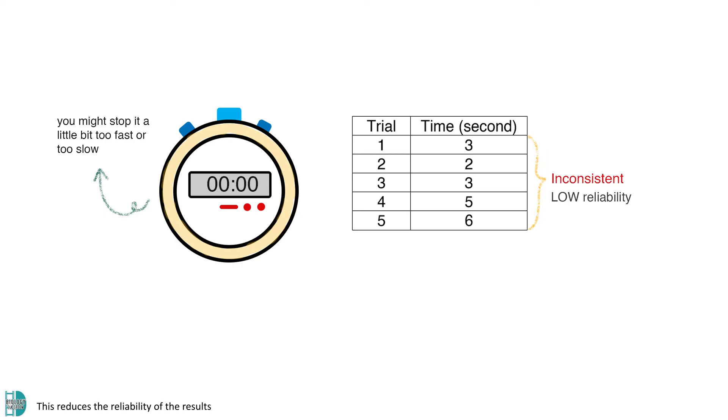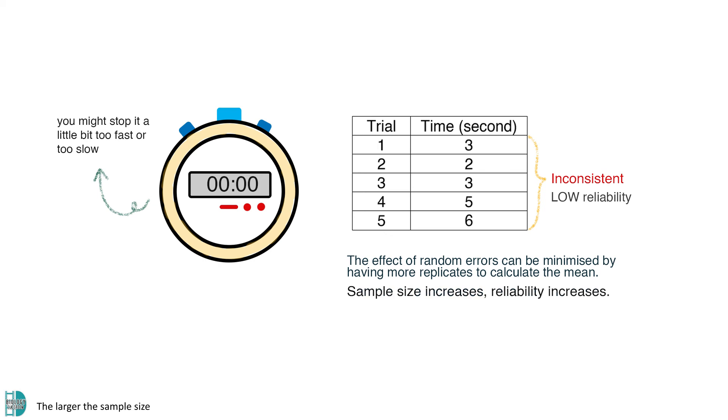This reduces the reliability of the results. The effect of random errors can be minimized by having more replicates to calculate the mean. The larger the sample size, the more reliable the mean would be.